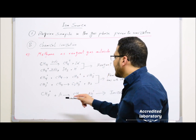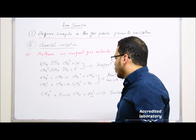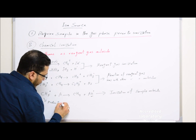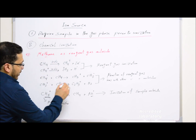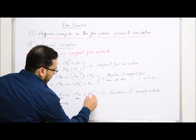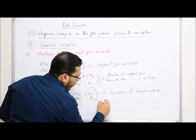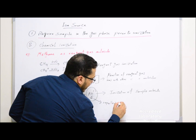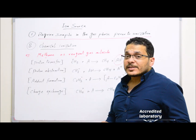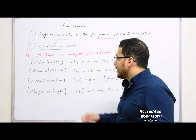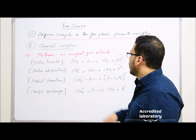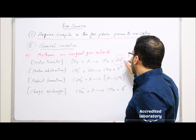These reagent gas ions then react with sample molecules to ionize them. In the case of proton transfer: CH5⁺ (the reagent gas ion) reacts with sample molecule A to form CH4 plus AH⁺. The ionized sample molecule AH⁺ will be sent as it is to the mass analyzer and will not be fragmented again. In proton transfer, a proton is transferred from the reagent gas ion to the sample molecule to form CH4 plus AH⁺, which is the ionized sample molecule.